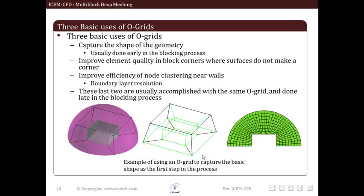Third, we improve efficiency of node clustering near wall so as to capture boundary layer effects. We can see here a sample geometry which consists of hemisphere is shown in figure. The O-Grid has helped in capturing curvature properly along with good element at corner. A mesh cut section is shown to illustrate this particular aspect.